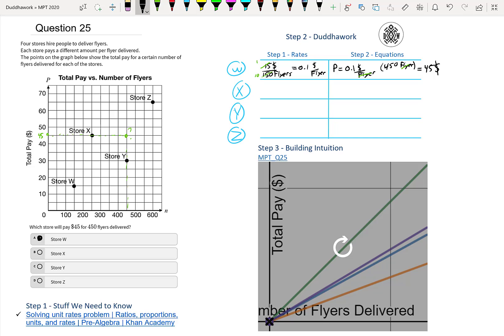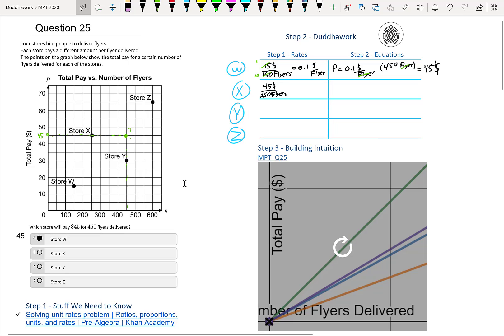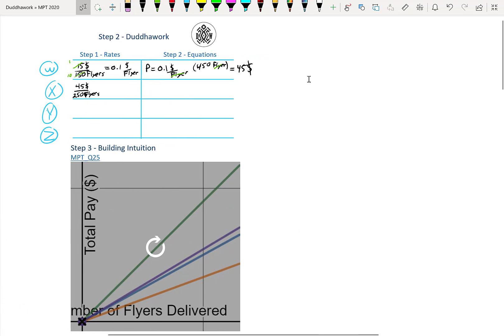So X, we get paid how much? $45. So a lot of people will probably just say $45 based on the Y-coordinate of store X, right? And then it's 250 flyers. So when you do the math here, I'll do it on the side. So $45 divided by 250, which is $0.18 per flyer.